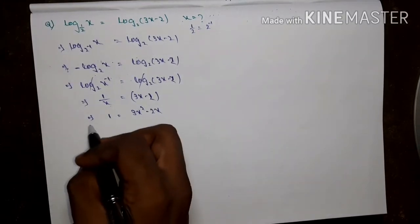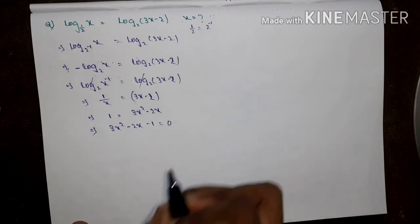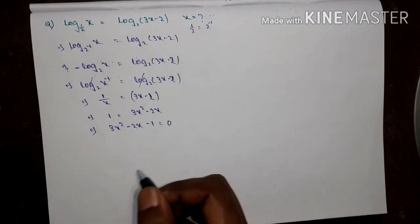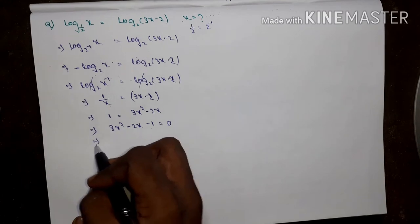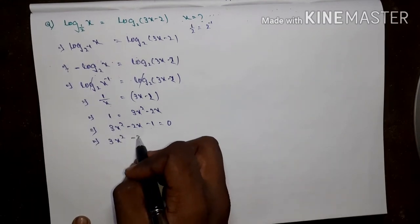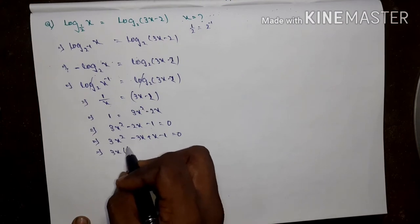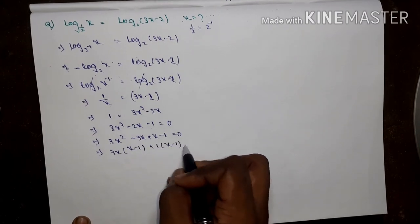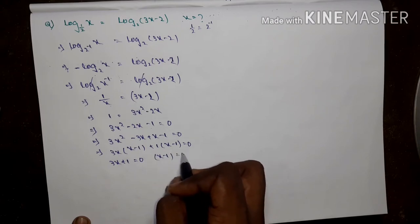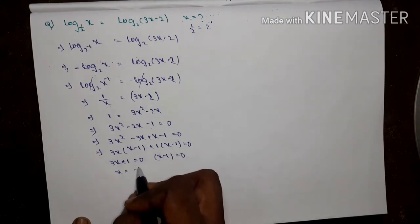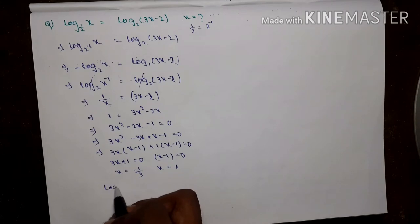Cancelling log_2 on both sides: x to the power minus 1 equals 3x minus 2, which I write as 1/x equals 3x minus 2. Multiplying both sides by x: 1 equals 3x squared minus 2x. So our equation is 3x squared minus 2x minus 1 equals 0.